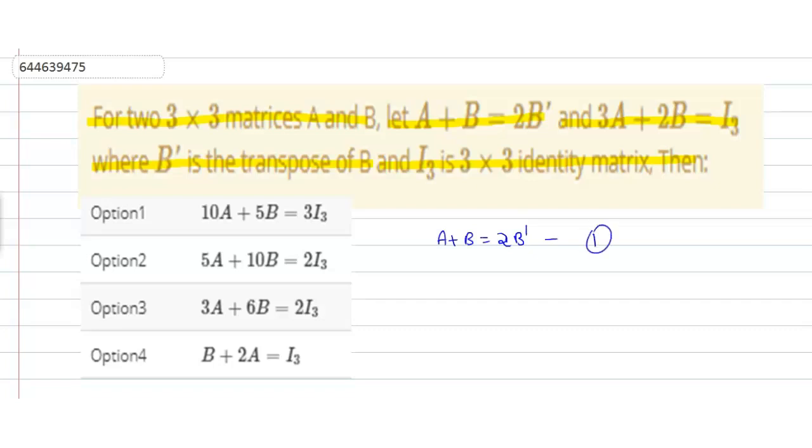Taking transpose on both sides we have A^T + B^T = 2B, which is our equation second. And we also have 3A + 2B = I₃, which is our equation third. Taking transpose on both sides we get 3A^T + 2B^T = I₃, which is our equation fourth.